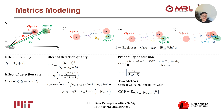Finally, two novel metrics can be defined. Critical collision probability, CCP, represents the average collision probability under critical conditions. Average collision probability, ACP, represents the average collision probability under all conditions.